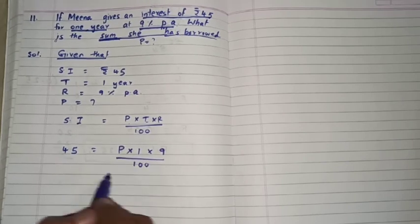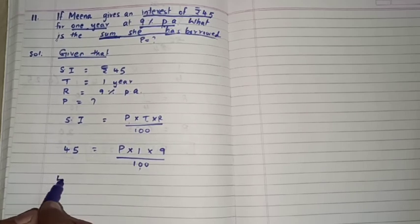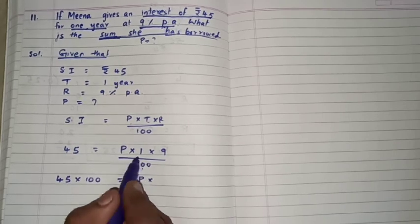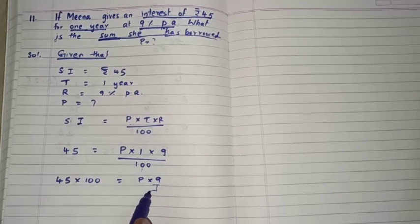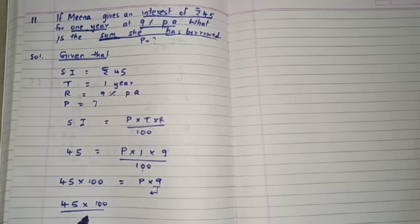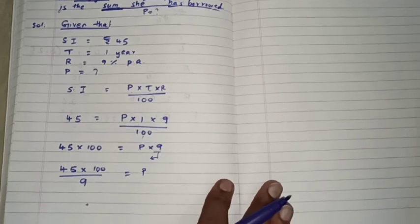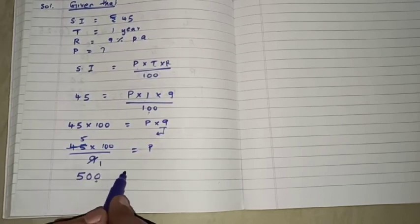Abh yahaan par dekh lije, yeh by 100 ko udher bhej rahe hain to ho jayega 45 into 100 divided by P into one, 9 and 9. Abh yeh into 9 ko next step mein udher bhej diya to wo kya ho jayega? 45 into 100 by 9 is equal to P. Abh yeh kaise karenge? 9 ones are 9, 9 fives are 45. To abhi 5 into 100 is nothing but 500 is equal to P.